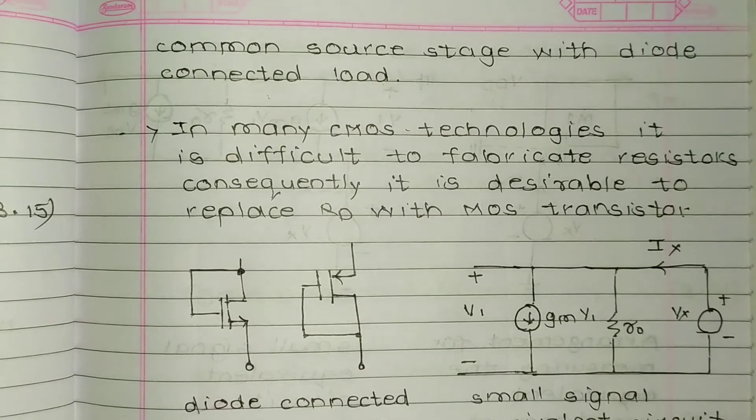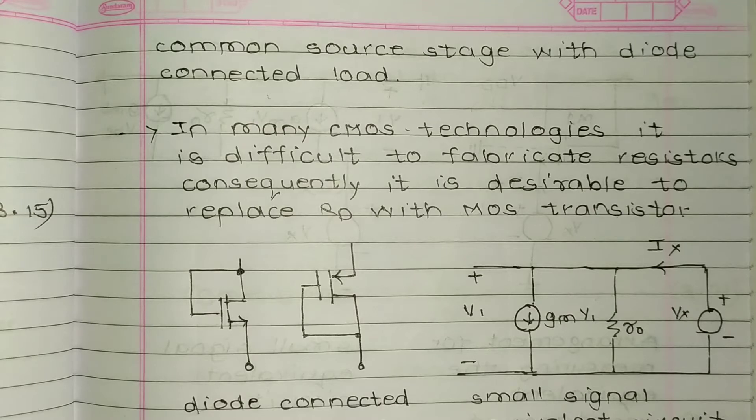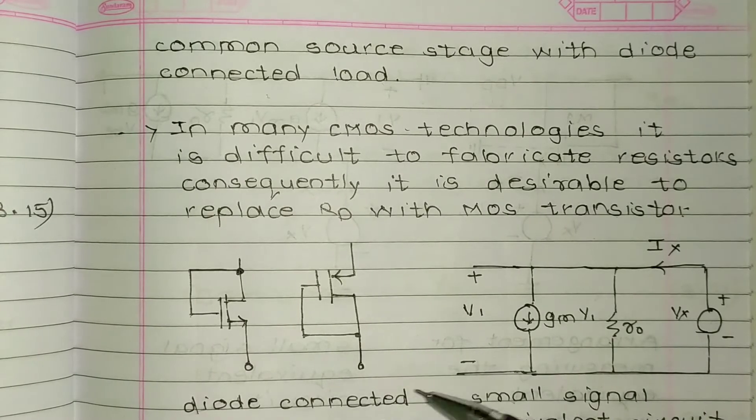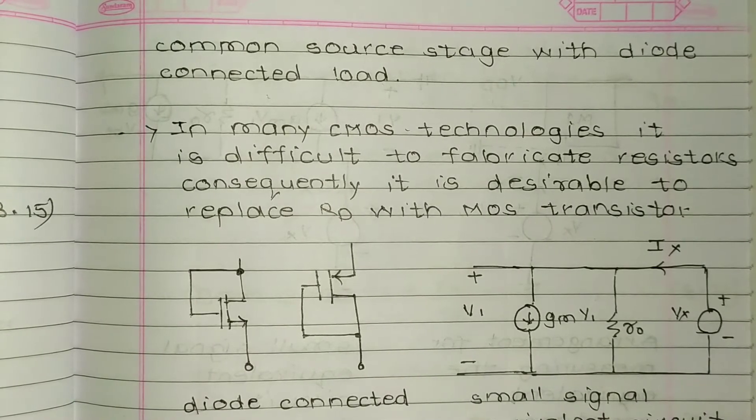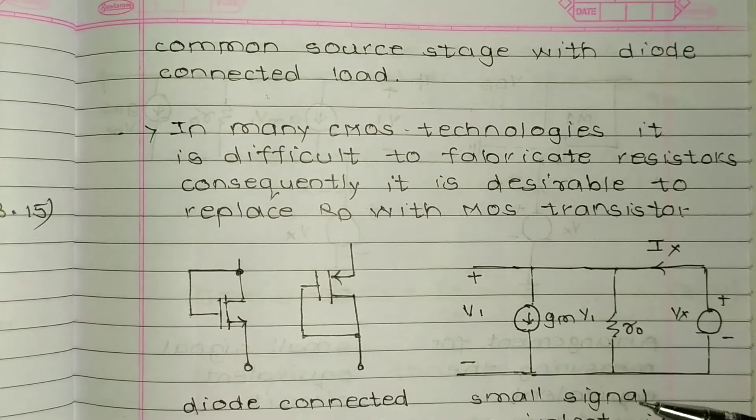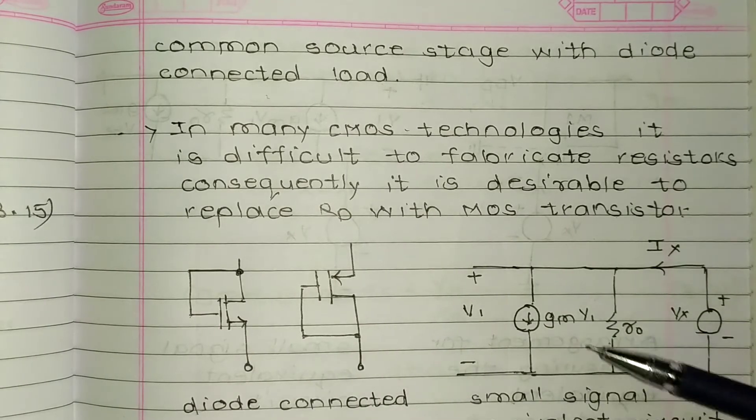Common source stage with diode connected load. In many CMOS technologies, it is difficult to fabricate resistors. Consequently, it is desirable to replace RD with MOS transistor. These are figures of diode connected NMOS and PMOS devices, and this is the small signal equivalent circuit.